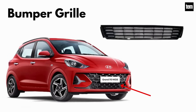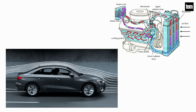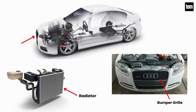Bumper grille. The bumper grille covers the front body of the vehicle and allows your engine to keep cool. When you drive your car, it sucks air through the grille which serves to provide ventilation through the engine bay. Primarily, it protects the radiator and allows cold air to enter the radiator of the car.